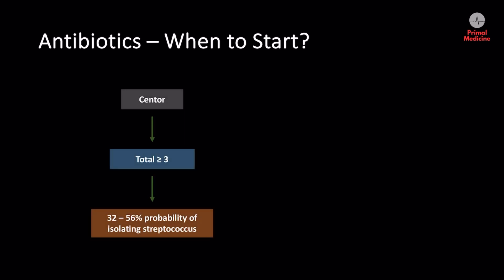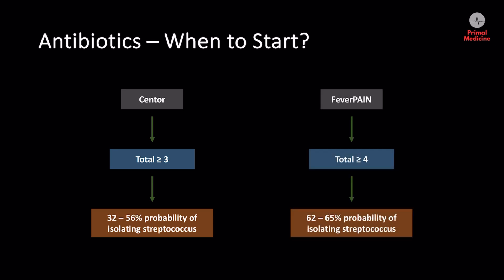After calculating the Centor or FeverPAIN score, we use it to determine the appropriateness of starting antibiotic therapy. For the Centor criteria, the maximum is four points — if the patient scores three or more, that is deemed significant to start antibiotic therapy, as the likelihood of a bacterial cause is up to 56 percent. For the FeverPAIN score, the maximum is five points — if the patient scores four or more, the probability of a bacterial cause is 62 to 65 percent.